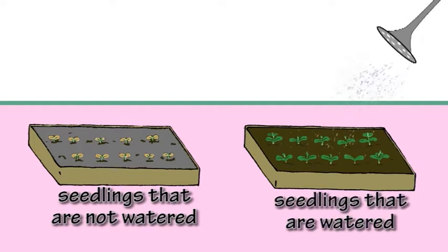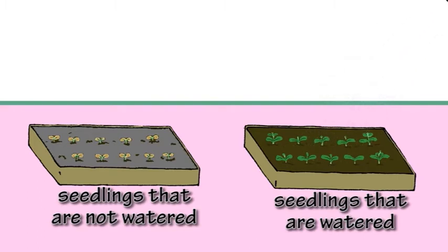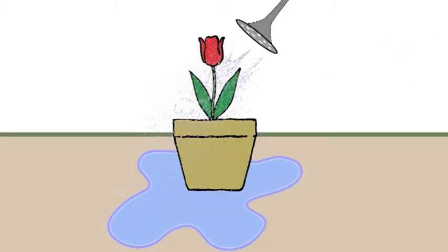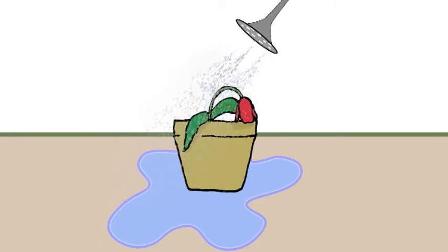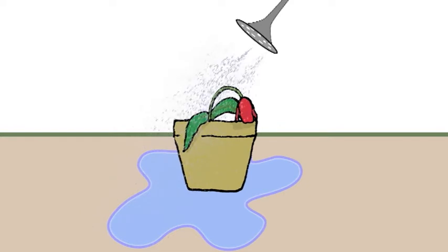Seedlings that are watered regularly grow and are healthy. But be careful not to water a plant too much, or the soil can become waterlogged and the plant can drown.